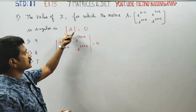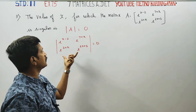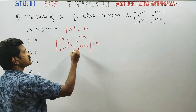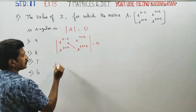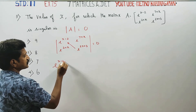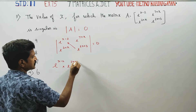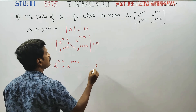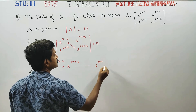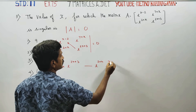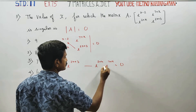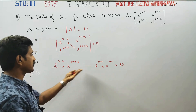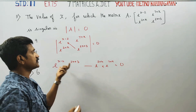A matrix has a determinant value of 0. You have to multiply the right-hand side minus the left-hand side: e power (x minus 2) into e power (2x plus 3), minus e power (2 plus x) into e power (7 plus x), is equal to 0.